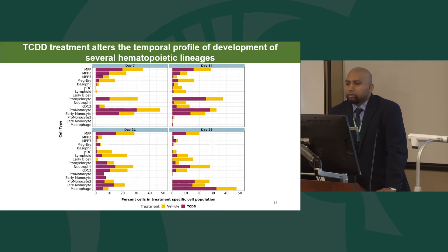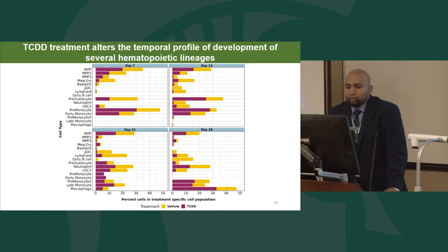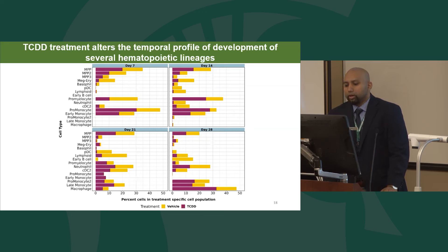Looking at the percentage of cells in each cluster over time across treatments — vehicle in yellow and TCDD in purple — multipotent progenitor populations show virtually similar proportions between groups. However, early on we see increased pro-monocyte and early monocyte populations in the TCDD group, a trend continuing on day 14. By day 21, lead monocyte populations increase in the TCDD group, and by day 28 there is an almost twofold increase in the monocyte-macrophage population in the TCDD group compared to vehicle.